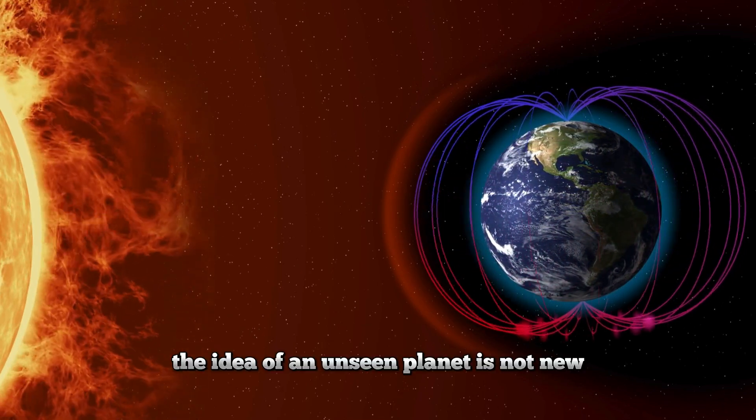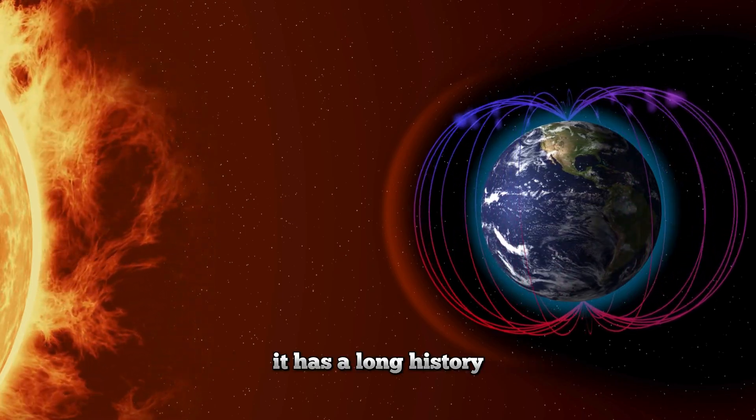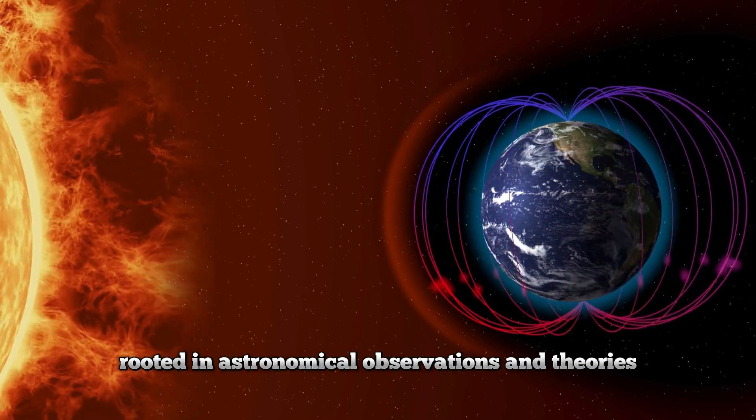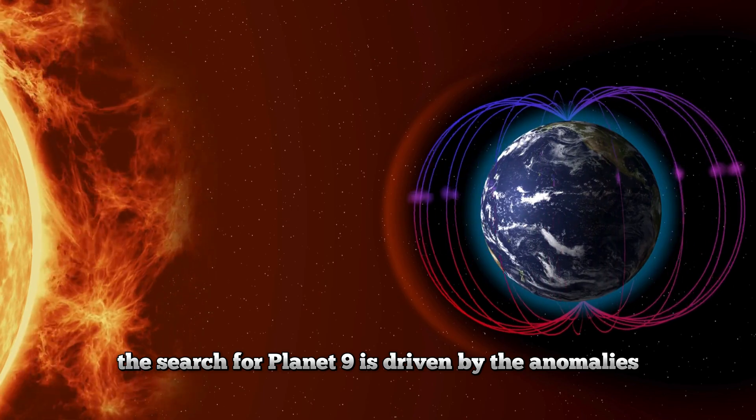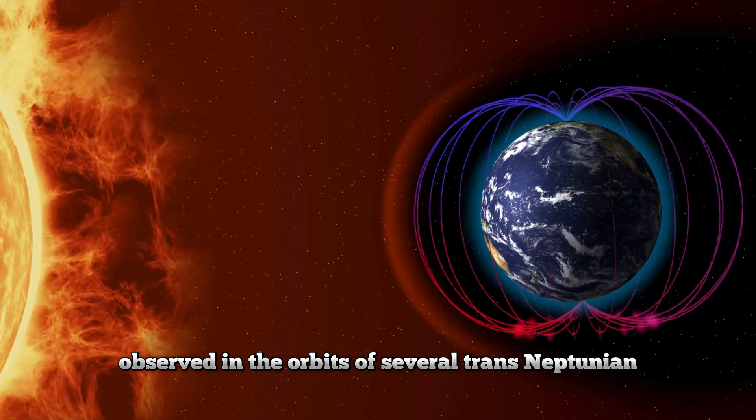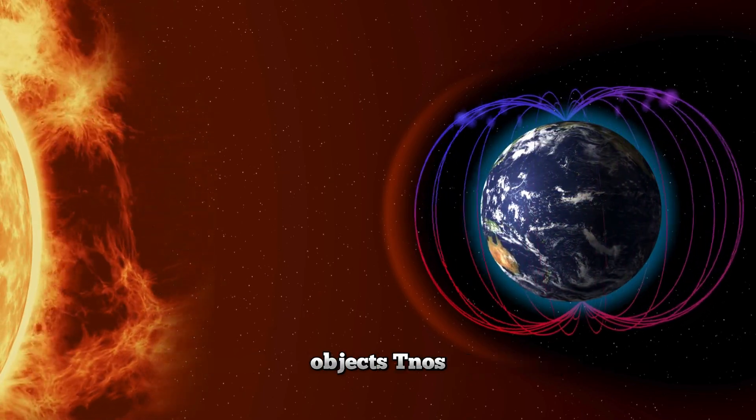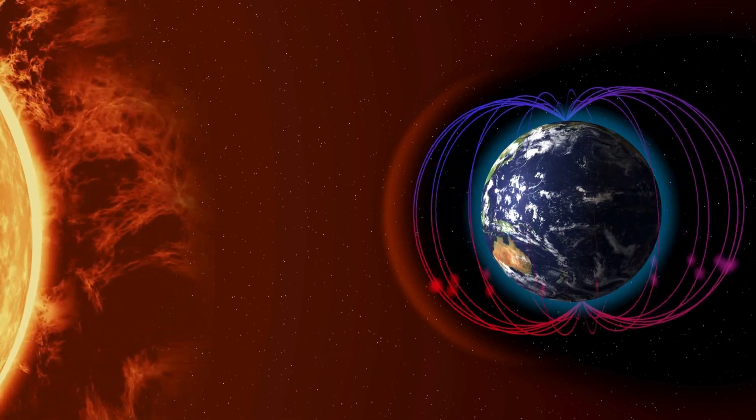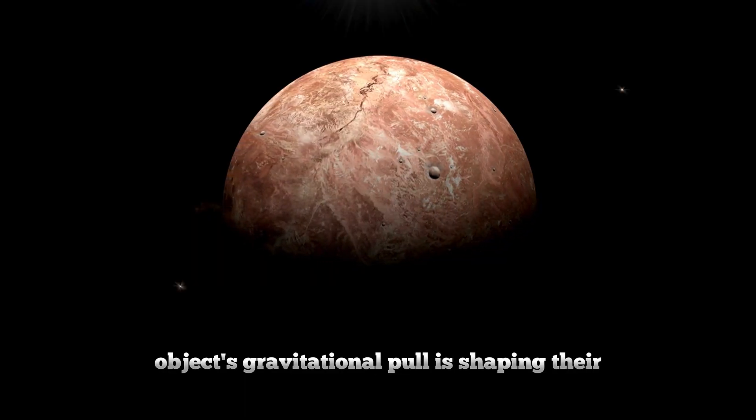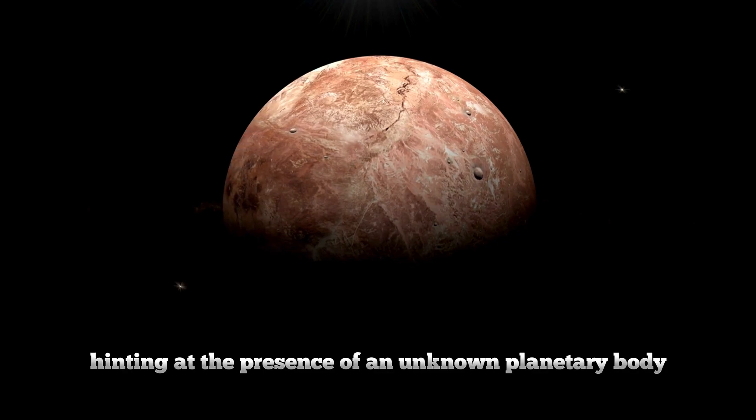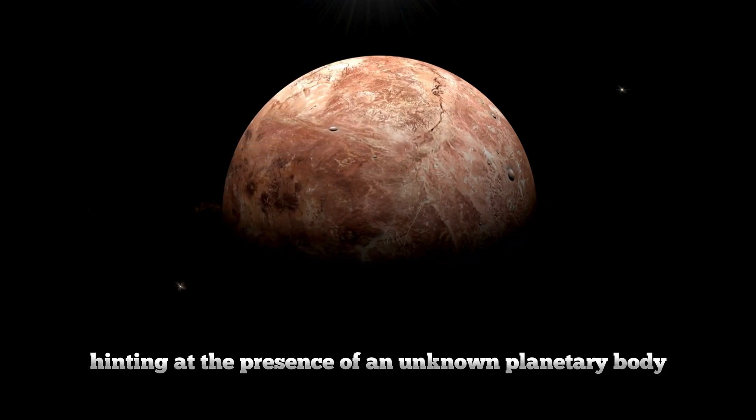The idea of an unseen planet is not new. It has a long history, rooted in astronomical observations and theories. The search for Planet Nine is driven by the anomalies observed in the orbits of several trans-Neptunian objects. These anomalies suggest that a massive object's gravitational pull is shaping their trajectories, hinting at the presence of an unknown planetary body.